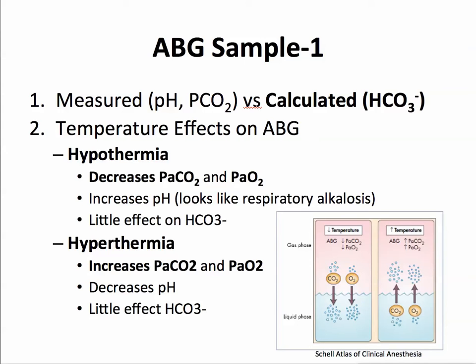If the patient's temperature is not 37 degrees like it is in the arterial blood gas machine, and the patient is hypothermic, the molecules of oxygen and CO2 do not have as much kinetic energy. They don't bounce around as much to create higher partial pressures — cold actually decreases PaCO2 and PaO2. And as the CO2 goes down, it looks more and more like a respiratory alkalosis as the patient gets cold. Because this temperature effect is relatively acute, it has little effect on bicarbonate.